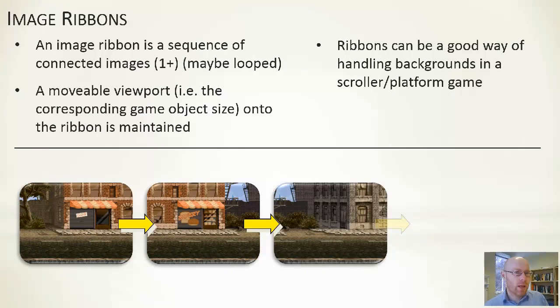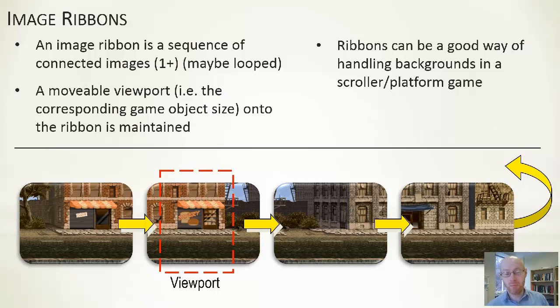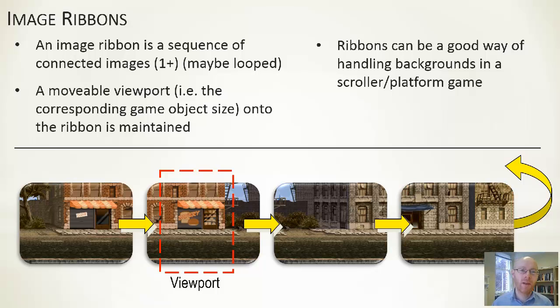The most common use is as an indicator for drawing backgrounds within games. We can define an image ribbon as a sequence of connected images — maybe one image, maybe two, could be fifteen — and it may be looped. Looping means when you get to the end of your sequence you go back to the start, and this ties into the notion of the seamless image, where if you draw the images side by side you can't see the join between them. For a scrolling background this works particularly well.